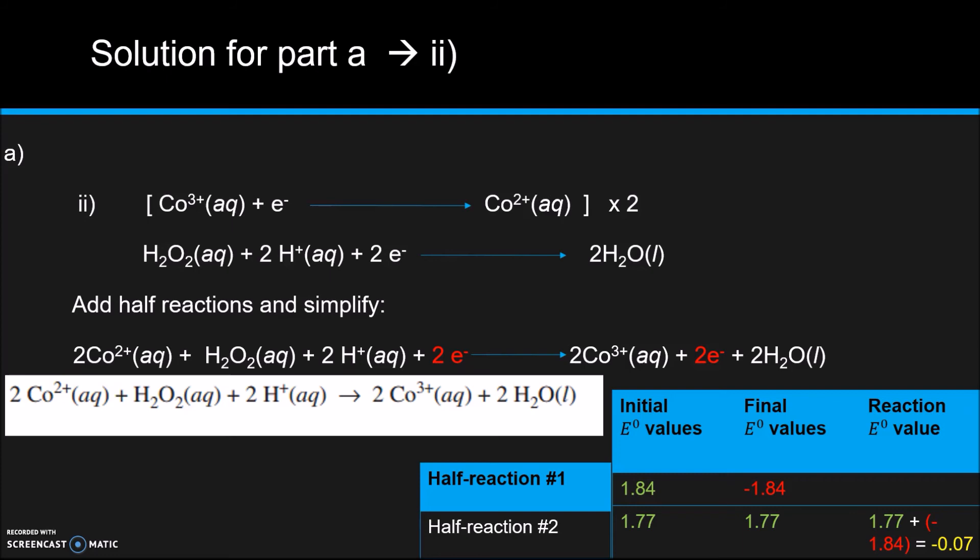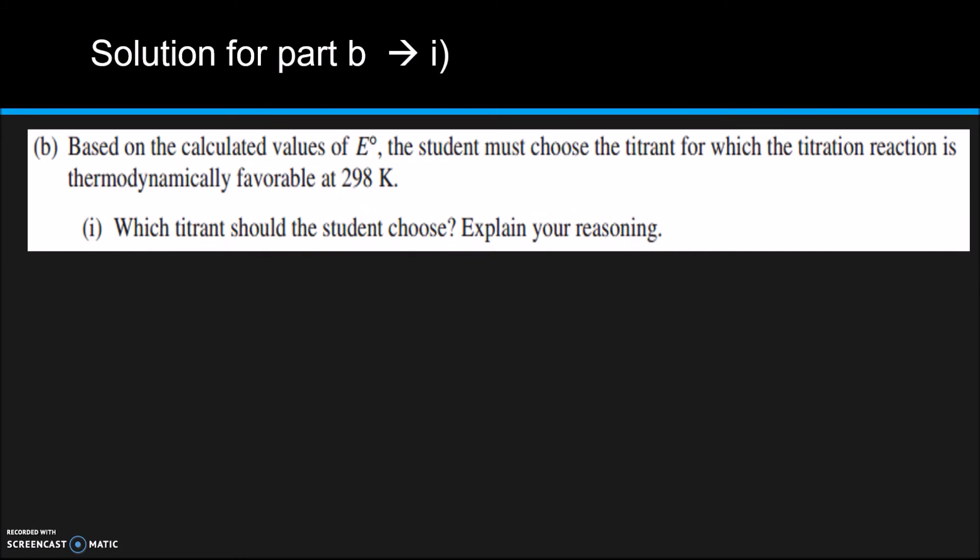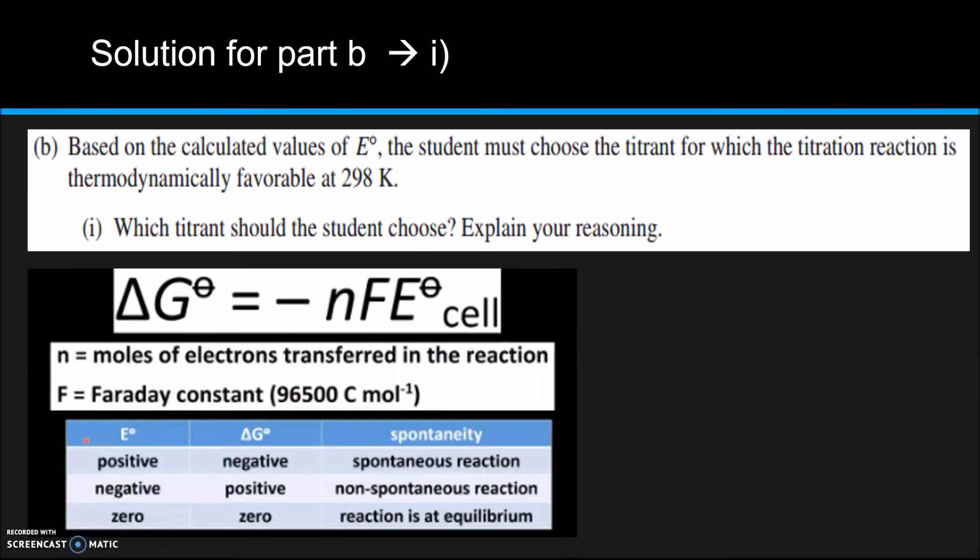Okay, so that's all you have to do for part A. So for part B, it actually gets quite simple if you understand part A. Part B asks which titrant should the student choose in order to make the titration reaction thermodynamically favorable. Well, if you think back to your equation sheet, you should notice one equation that sticks out to you.